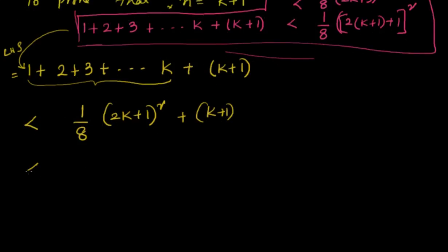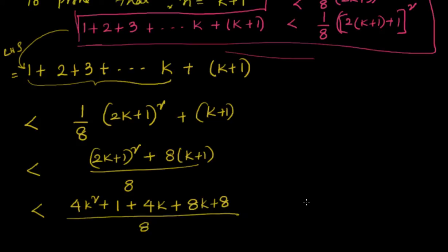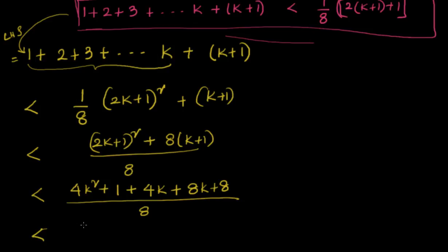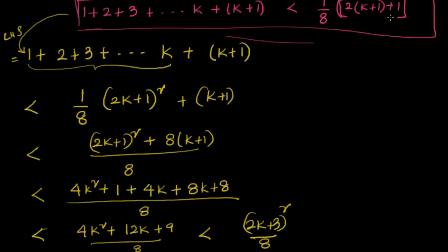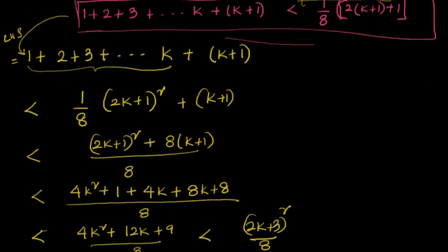Simplifying: (2k+1)² plus 8(k+1), all divided by 8. Expanding (2k+1)² gives 4k² plus 4k plus 1, and 8(k+1) gives 8k plus 8. So the numerator is 4k² plus 12k plus 9, divided by 8, which equals (2k+3)² divided by 8. This is exactly what we had to prove — LHS is less than 1/8 times (2k+3)².